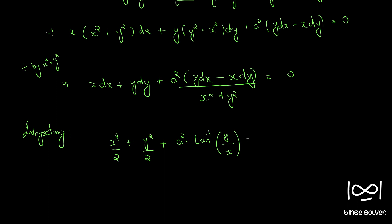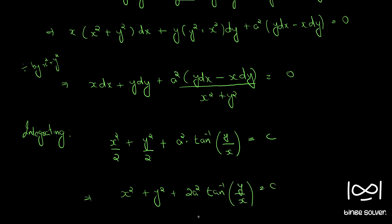Equal to c. Or if we multiply throughout by 2, we get x square plus y square plus 2a square tan inverse y by x is equal to c.